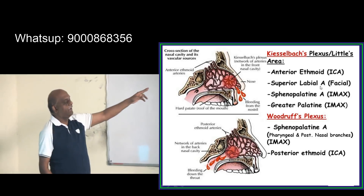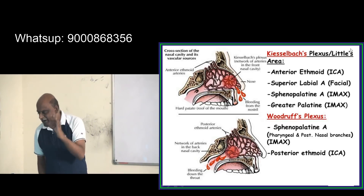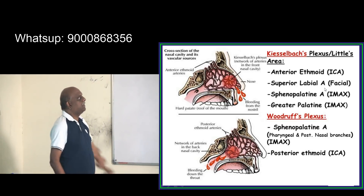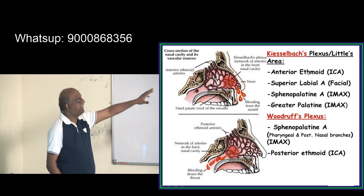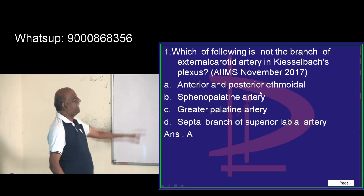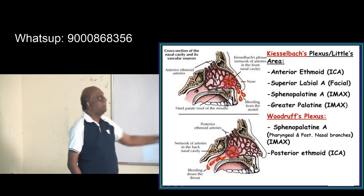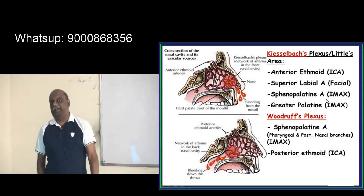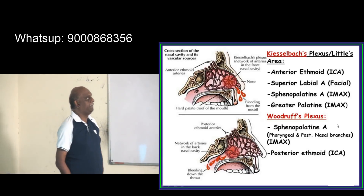The only component in the vascular tree of Kisselbach's plexus which is NOT an external carotid artery branch is the anterior ethmoid artery, which is a branch of the internal carotid artery. This is what you have to clearly remember.